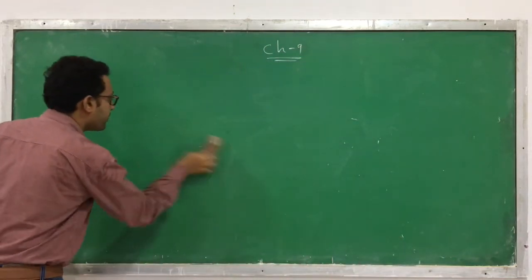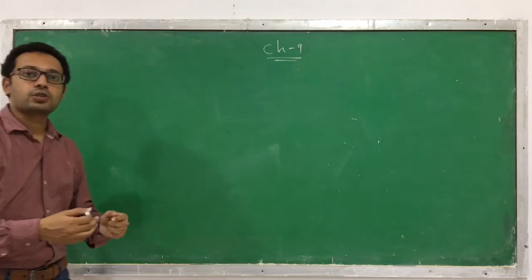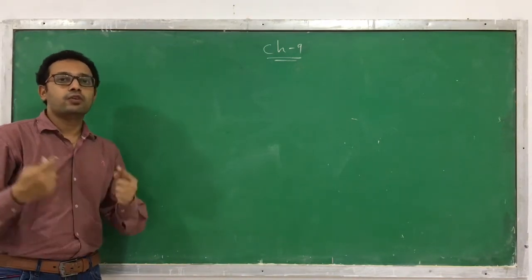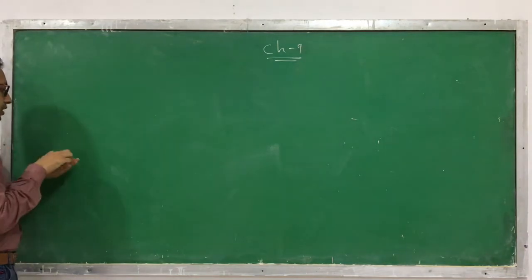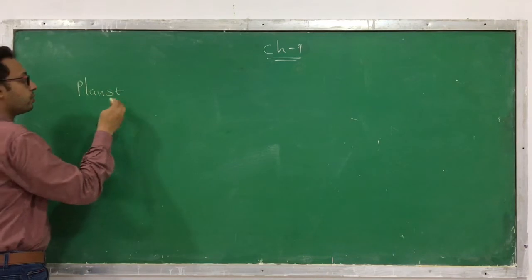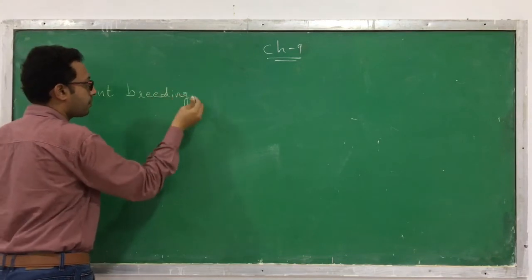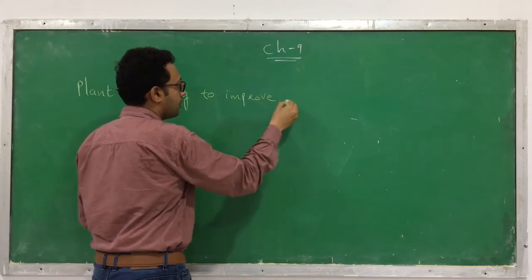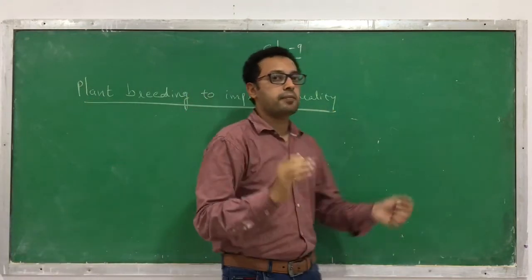In the first goal we want to generate higher yield. In the second goal, we want to generate disease resistant plants. In the third goal, we want to generate pest resistant plants. The fourth goal is plant breeding to increase or improve the quality of a plant.